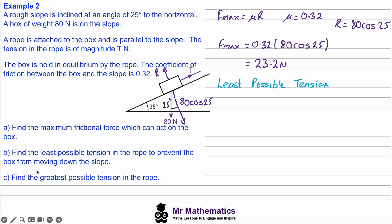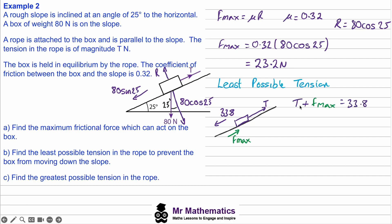For part b, find the least possible tension in the rope to prevent the box from moving down the slope. The weight component parallel and down the slope is 80 sin25 = 33.8 N. For minimum tension, friction acts up the slope alongside the tension. Since the box is in equilibrium, tension plus maximum friction equals 33.8 N. With F_max = 23.2 N, the minimum tension is 10.6 newtons.